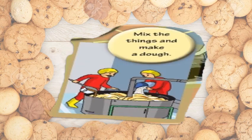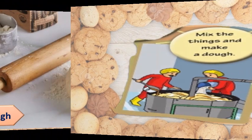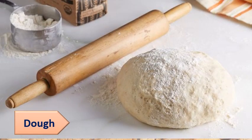The third step is to mix the things and make a dough. We are going to mix flour, sugar, water, milk — all the ingredients — put them in one machine, mix properly, and make a dough. Your mother makes dough before making roti. This is called dough.